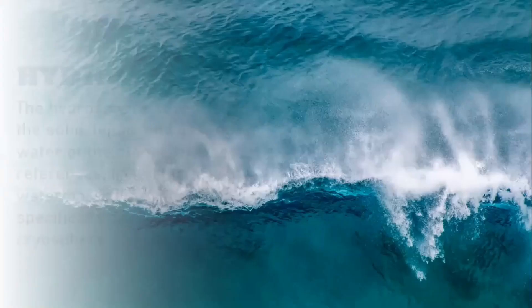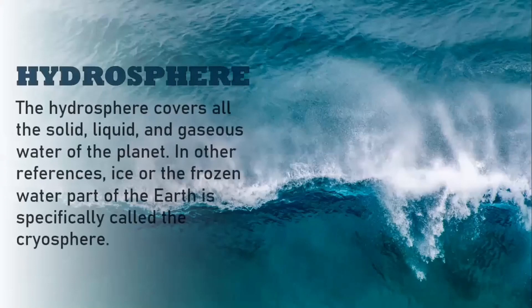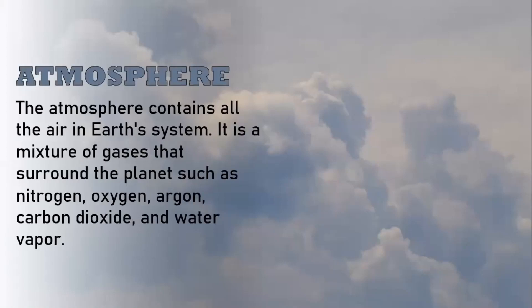From the term hydro, meaning water, the hydrosphere covers all the solid, liquid, and gaseous water of the planet. In other references, ice or the frozen water part of the Earth is specifically called the cryosphere. Lastly, the atmosphere contains all the air in Earth's system. It is a mixture of gases that surround the planet such as nitrogen, oxygen, argon, carbon dioxide, and water vapor.